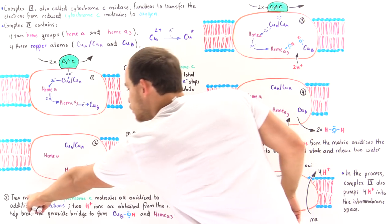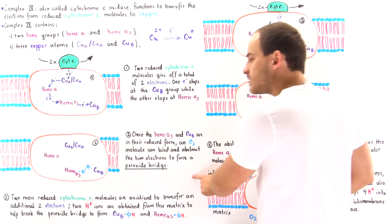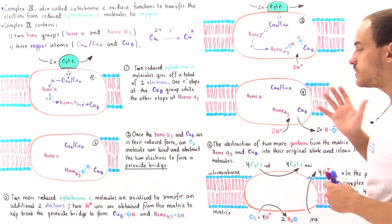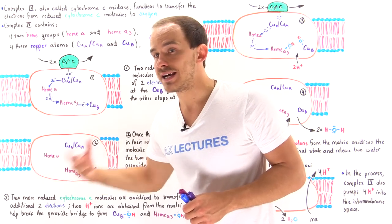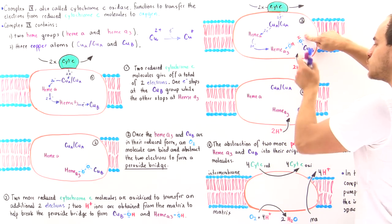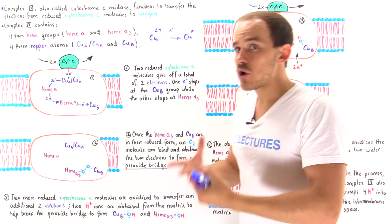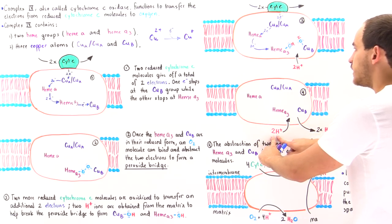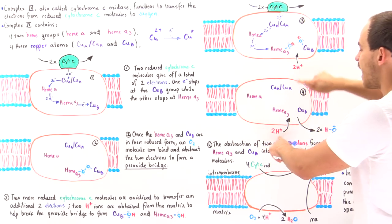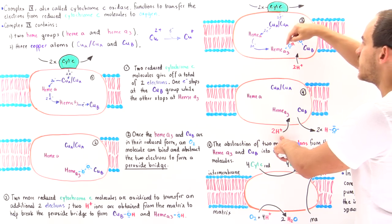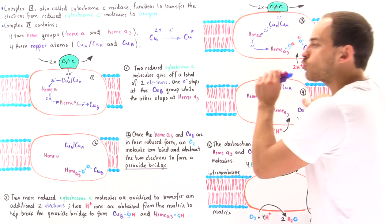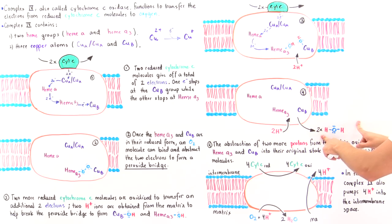In Step 3, two more reduced cytochrome C molecules are oxidized to transfer an additional two electrons into the system, and two H⁺ ions are obtained from the matrix to help break the peroxide bond, forming the copper hydroxide group and the heme A3 hydroxide group. Then two more protons are abstracted from the matrix — one is picked up by each hydroxide group — forming two water molecules, while regenerating copper B and heme A3 in their original oxidized forms.